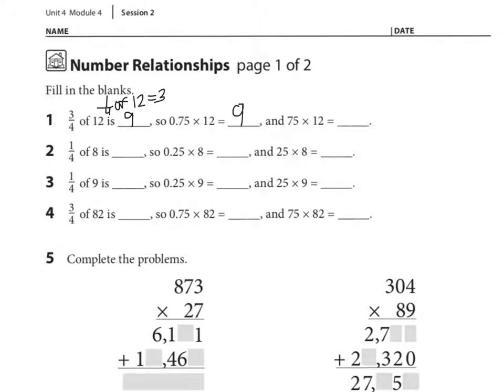And then 75 times 12, I can see a relationship between 75 hundredths and 75. 75 is 100 times more than 75 hundredths. So the answer here would be 100 times more than this. So what's 100 times more than 9? 900.